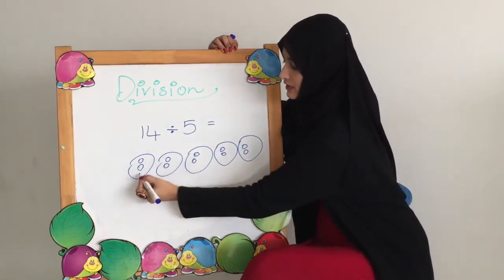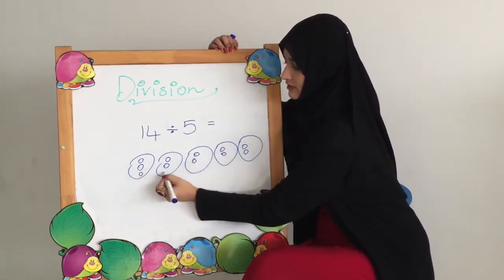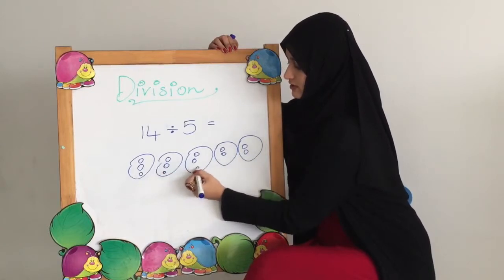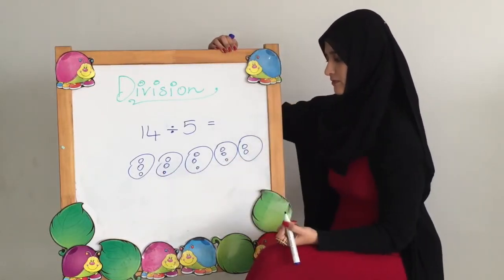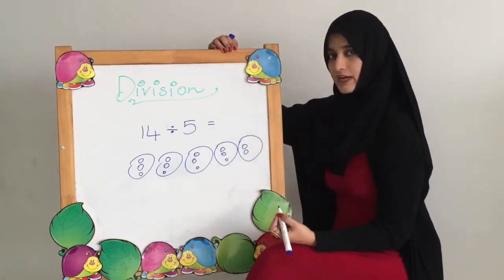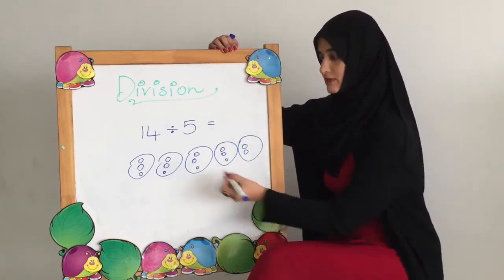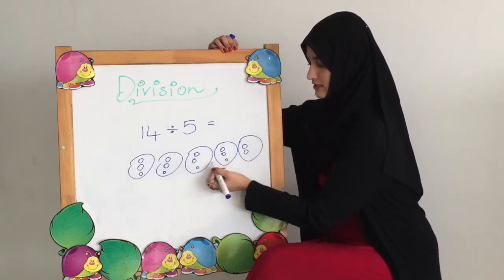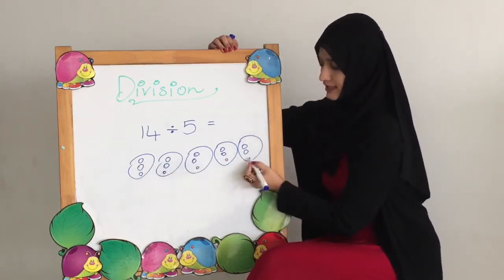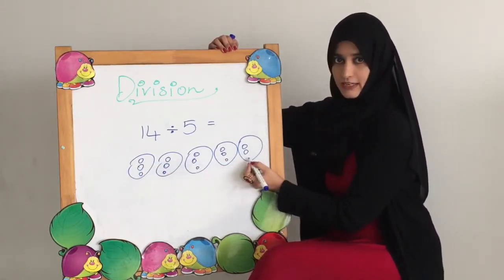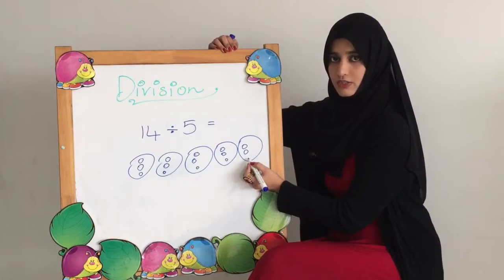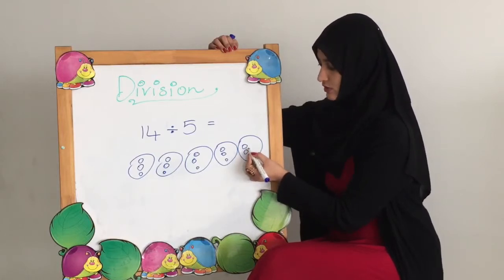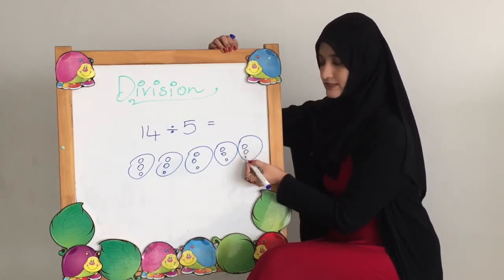Now, 11, 12, 13, 14. If I give these 4 sets the third ball, this set does not have the third ball. It only has 2. And this is unequal distribution.